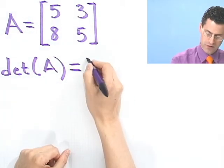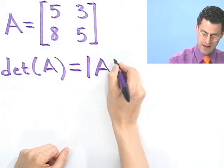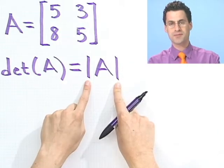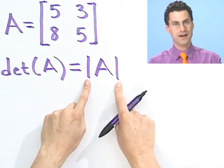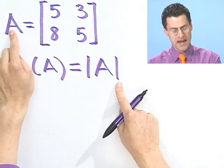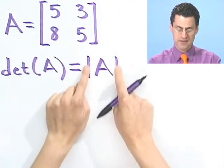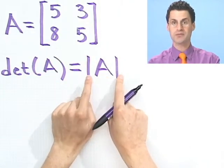However, some people use the following notation. They just put absolute value bars around it. It's a little bit misleading because you might think it's the absolute value of A, but it's not. If A is a matrix, then if you see these bars around it, that means determinant of A.